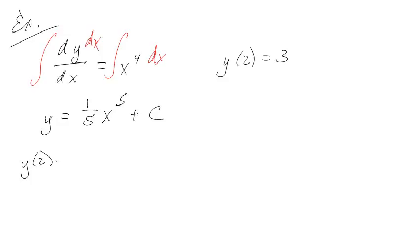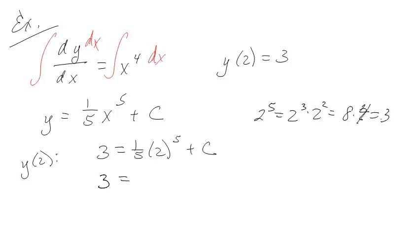On the left I've got y, 1 fifth x to the fifth plus c. So I'm going to apply the initial condition for my initial value problem. Y is 3 whenever x is 2. So I've got 3 equals, I don't know what that is. 2 to the fifth is 2 cubed times 2 squared, so that's 8 times 4 is 32. That's kind of what I thought, just making sure.